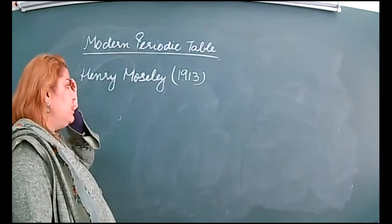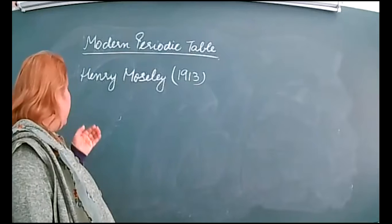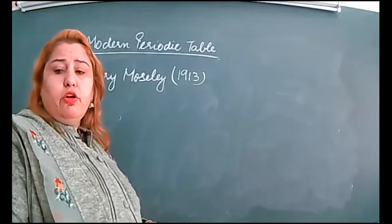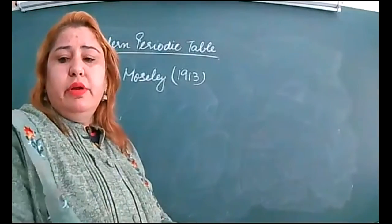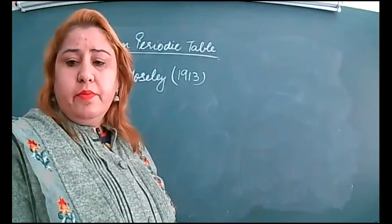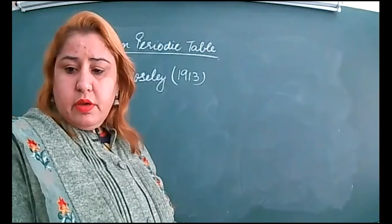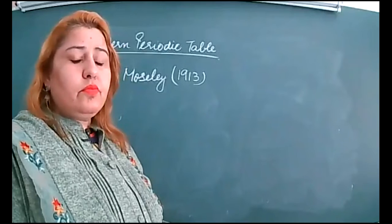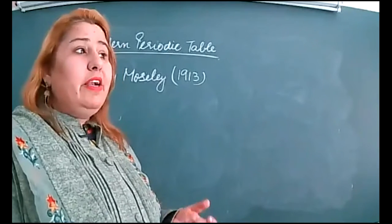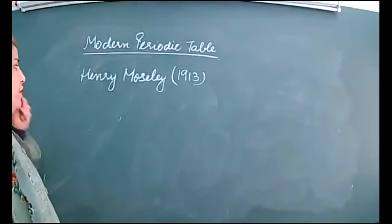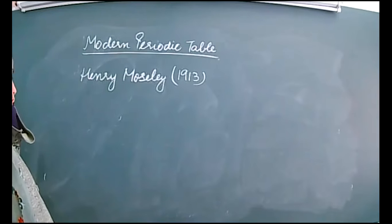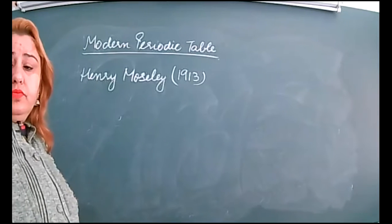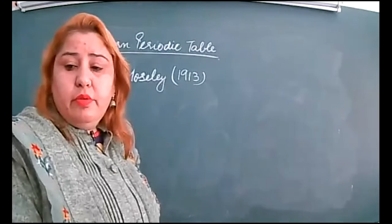In the previous one, you had read the Mendeleev periodic table, which was based on increasing atomic masses. What are the three limitations of the Mendeleev periodic table? Please unmute yourself.